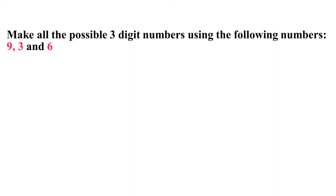Have a look at this question. Make all the possible three digit numbers using the following numbers: 9, 3 and 6. First, we will remove the comma and write the numbers together to get a three digit number. Here, it is 936. Now, we will interchange the last two digits to get 963.